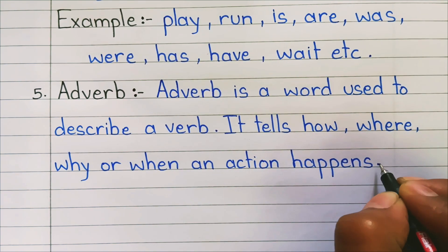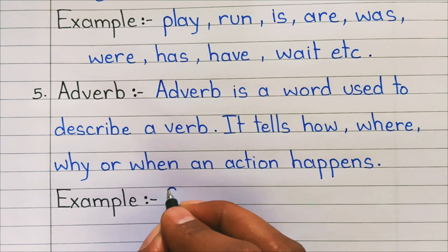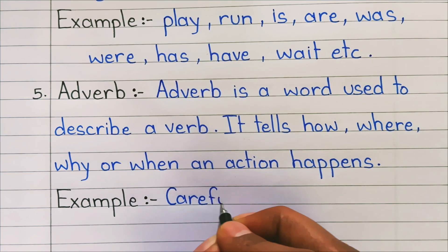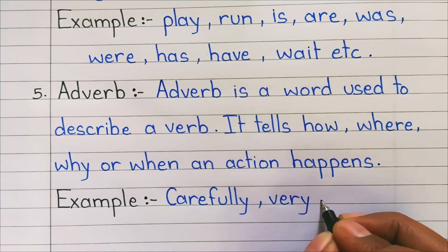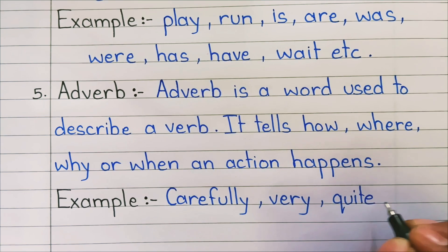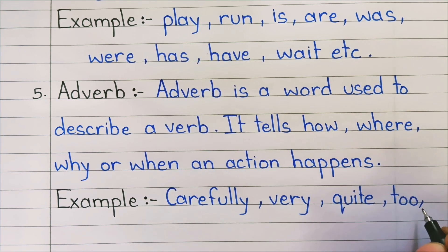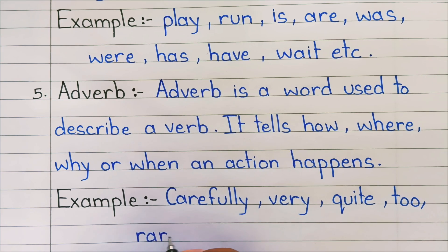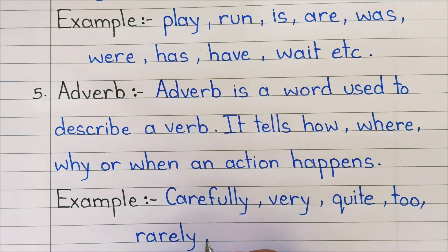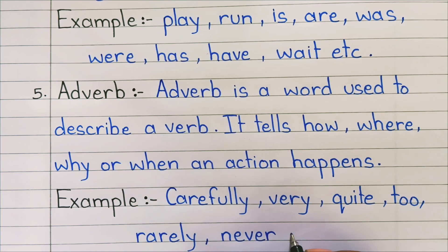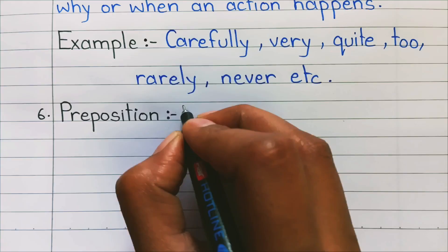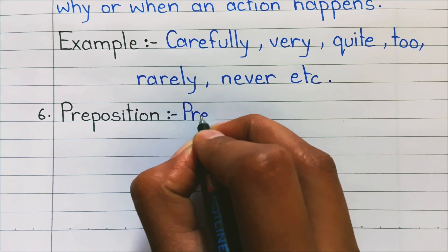5. Adverb: Adverb is a word used to describe a verb. It tells how, where, why, or when an action happens. Examples: carefully, very, quite, too, rarely, never, etc.